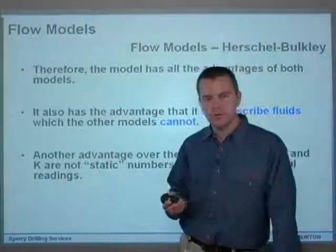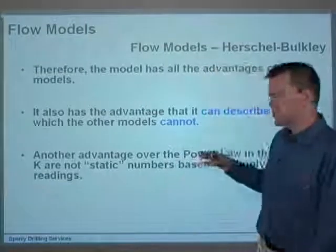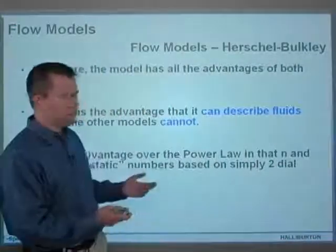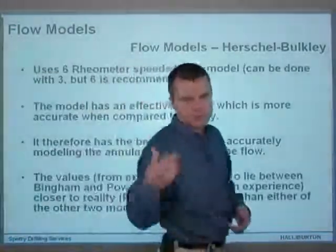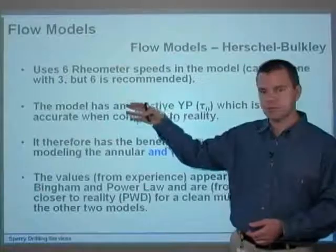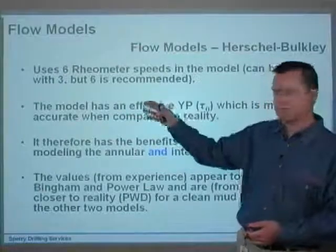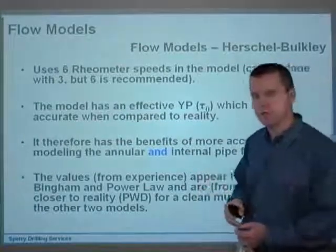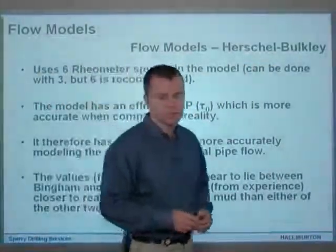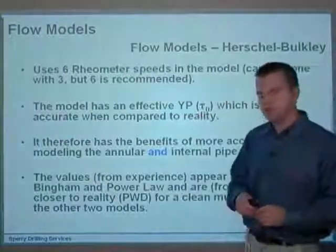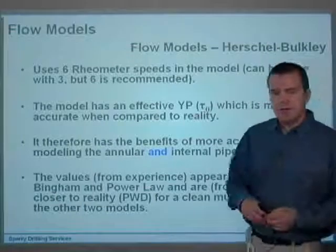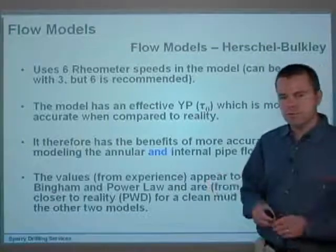Another advantage over the power law is that n and K aren't static numbers based on just the 300 and 600 dial readings — they're actually based on six rheometer speeds, though it can be done with three. You're recommended to use all six rheometer speeds available on a mud report. These days, on most mud reports worldwide, you should get six rheometer speeds and put them into your Herschel-Bulkley model. The model has an effective YP, which is tau-zero, that is more accurate when compared to reality.